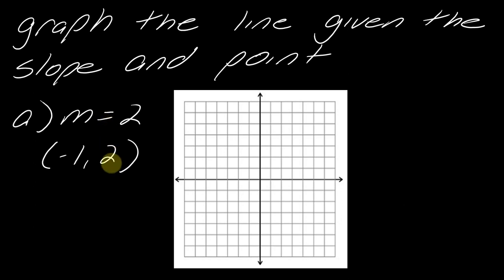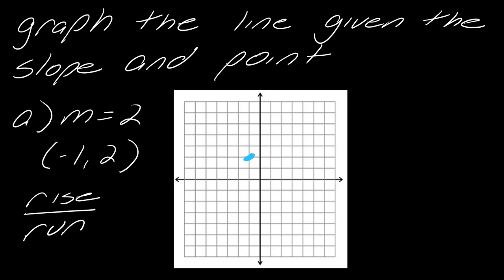Here's how we do this. We start by first plotting the point negative one, two. So I come here at the origin, go to negative one and up two. Now from here we want to incorporate the slope. My slope is two, which is a whole number. The thing to remember is that slope is rise over run, so two is really two over one — the rise is two and the run is one.